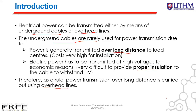As an introduction, we would like to know that electrical power can be transmitted either by means of underground cable or overhead lines. Underground cables are rarely used for power transmission because power is generally transmitted over long distances to load centers, which generates very high installation costs. Also, electrical power must be transmitted at high voltage for economic reasons, making it very difficult to provide proper insulation to the cable. Because of that, power transmission over long distances is carried out using overhead lines.